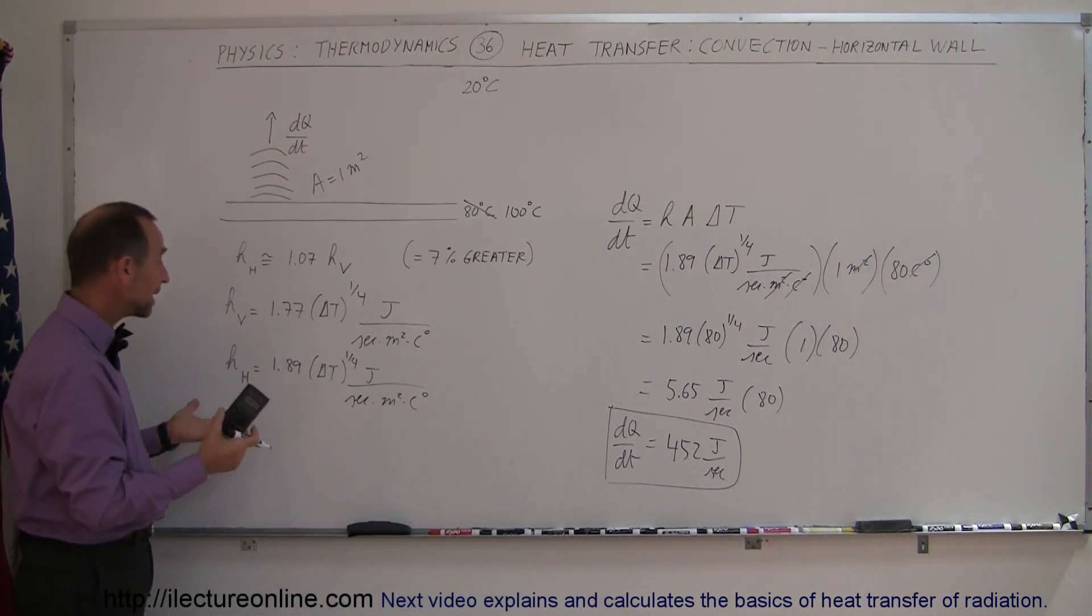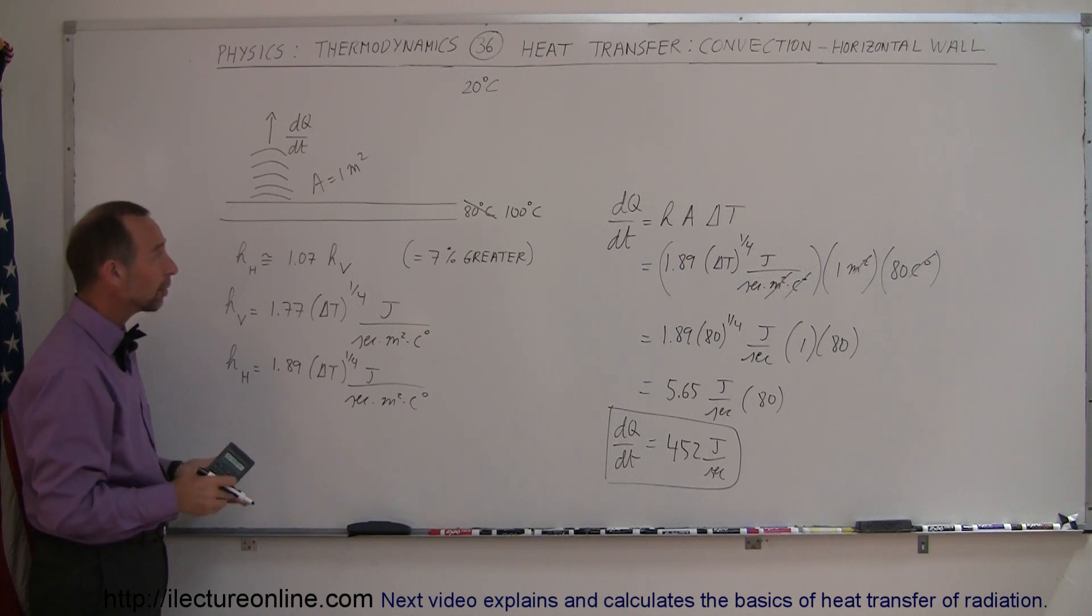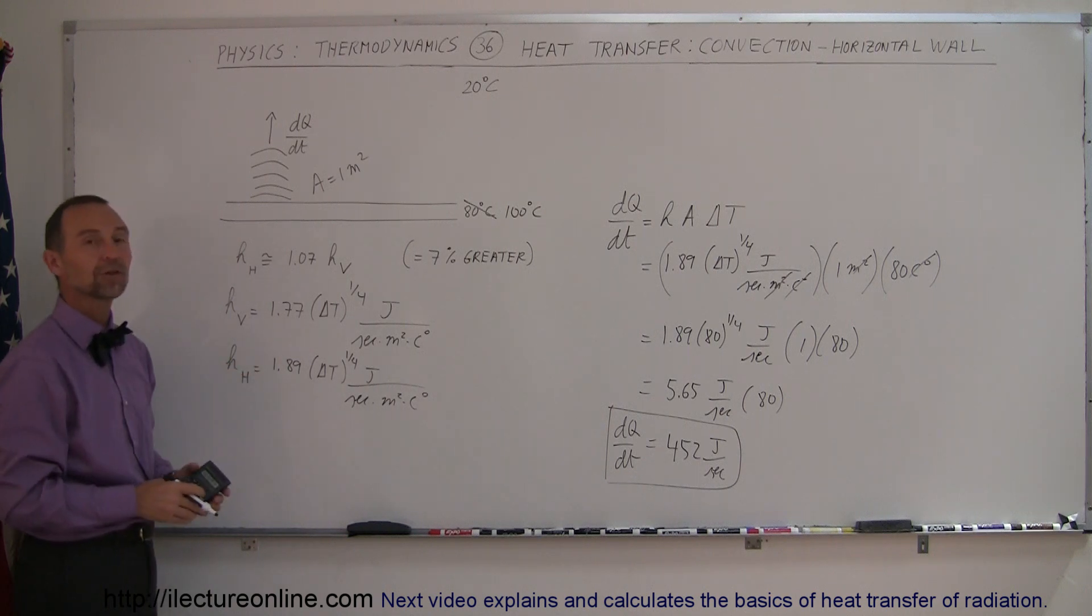All right, so that's how you find the dQDT, the amount of heat lost through convection from a horizontal surface.